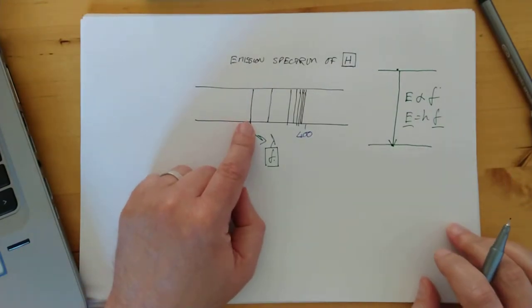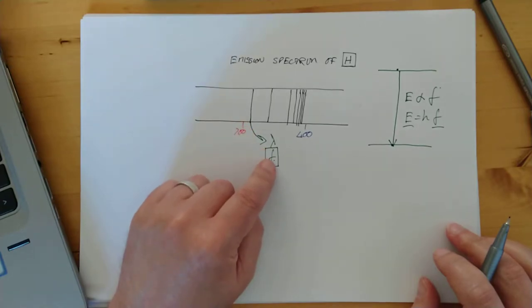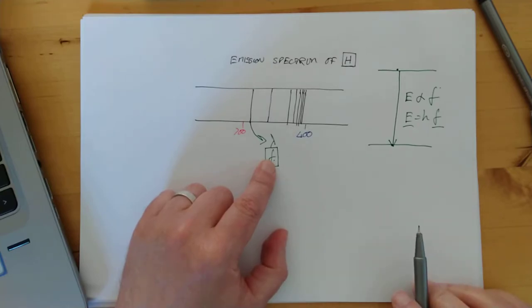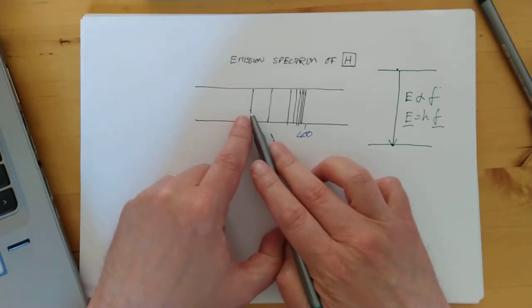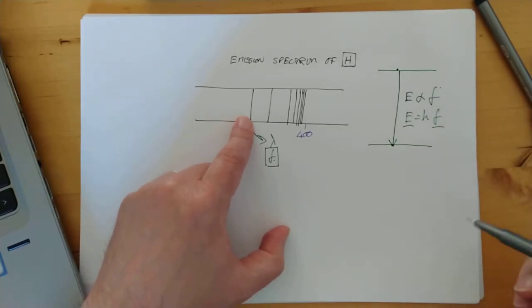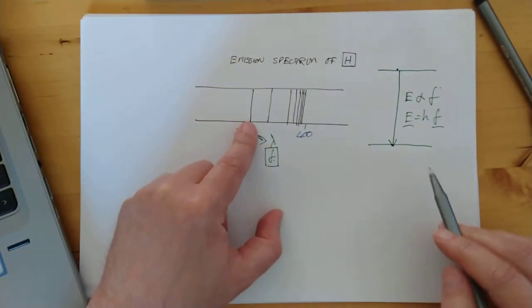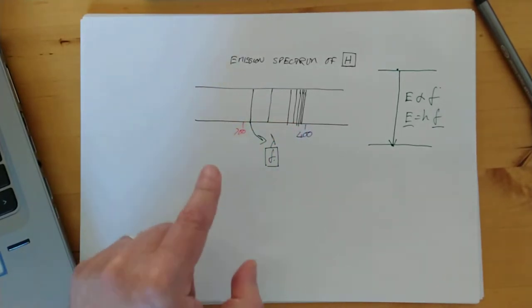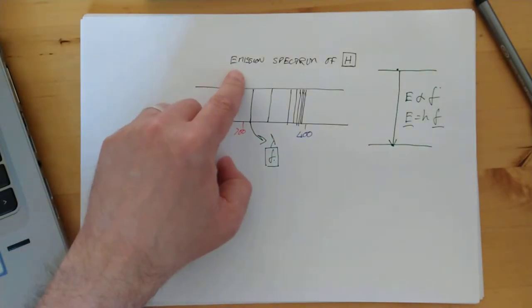So that means this line here at a particular frequency value is not one of these lines. It's a very common mistake, an easy mistake to make. It's not an energy level. This is a transition, a change between two energy levels. Specifically, in the case of emission, it's a drop.